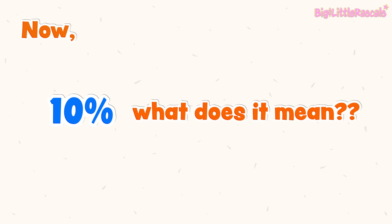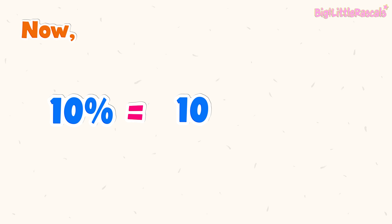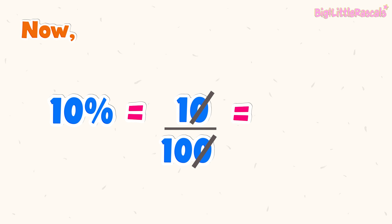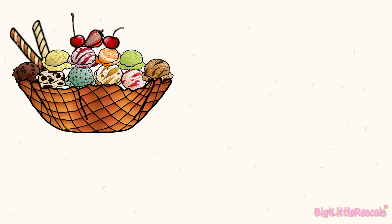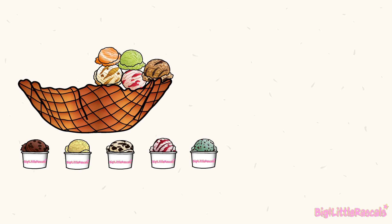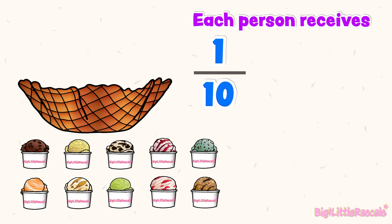Let's continue. How about 10%? What does it mean? 10% in fraction means 10 out of 100. When we perform the calculation of converting percentage to fraction, we do like this: 10 out of 100 — we strike all the same zeros from top and bottom, which leaves us with 1 out of 10. So 10% is the same as 1 tenth of 1 whole. Let's see this bowl of ice cream with 10 ice cream scoops inside. If I divide this ice cream for 10 people, then each person receives 1 out of 10 scoops, which is 1 tenth of the ice cream bowl — equal in percentage to 10%.